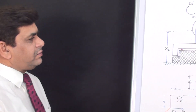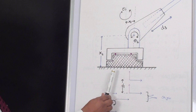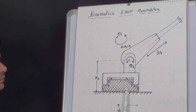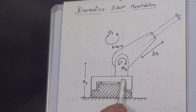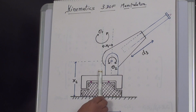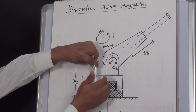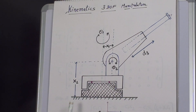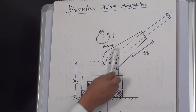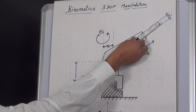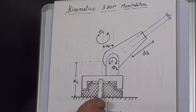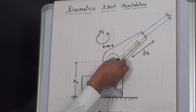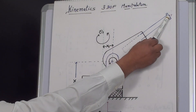In this example, the base is the fixed part of the manipulator. The first link is placed over the base and is able to rotate in any direction by angle theta one. This link is further connected with another link. The joints here are revolute joints, and one joint is a prismatic joint. The point P is the point of interest whose position and orientation we want to find out.